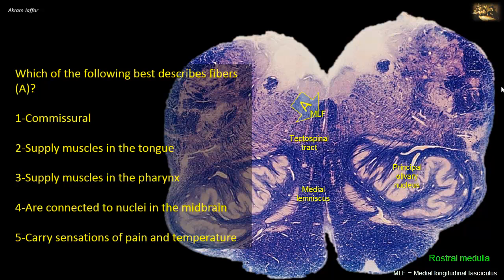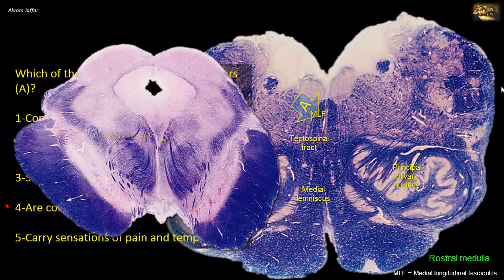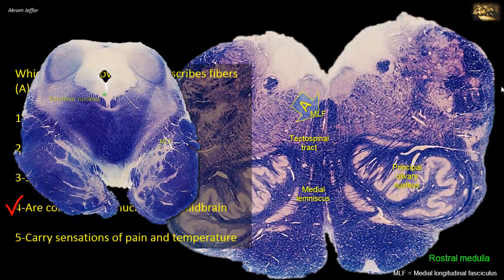The medial longitudinal fasciculus consists of ascending and descending fibers that connect the vestibular nuclei to the nuclei controlling extraocular muscles: the oculomotor, trochlear, and abducent nuclei. It is involved in coordinating head and eye movements and provides for conjugate eye movements coordinated with head movements to maintain visual fixation. The best description is option 4: connected to nuclei in the midbrain — the oculomotor nucleus at the level of the superior colliculus and the trochlear nucleus at the level of the inferior colliculus.